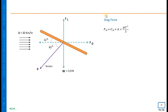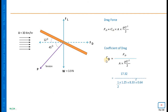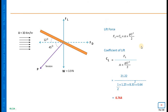Once drag force and lift force are known, we can estimate the coefficients. Using the drag force relation, with all parameters known except the coefficient of drag, and drag force = 17.32 N, CD comes to 0.624. Similarly, using the lift force relation with all parameters known and lift force = 21.22 N, the coefficient of lift CL comes to 0.764.